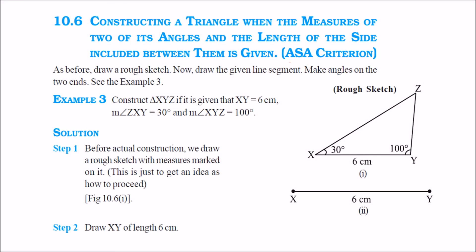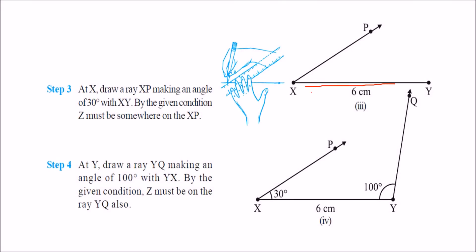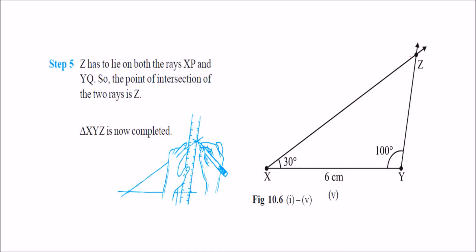Then we make a triangle with the ASA criterion — two angles and the included side. If you have to make triangle XYZ, make XY = 6, then make a 60-degree angle at X and a 100-degree angle at Y, and allow the two rays to intersect. Where they intersect is point Z. This is your required triangle.